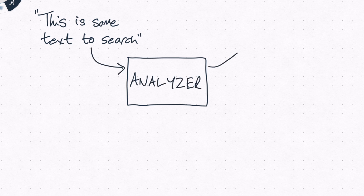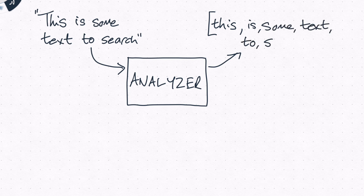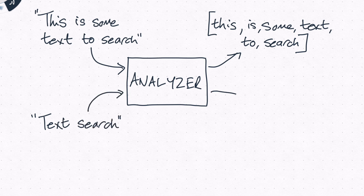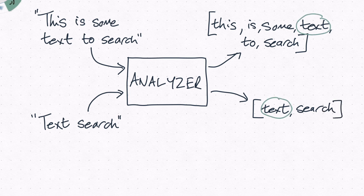A token is a fragment of the original text, usually an individual word or derived from an individual word. When you run a query, your search criteria goes through the same analysis process, resulting in another stream of tokens. Elasticsearch then looks for matches where tokens from your search criteria are in the field you're matching against.